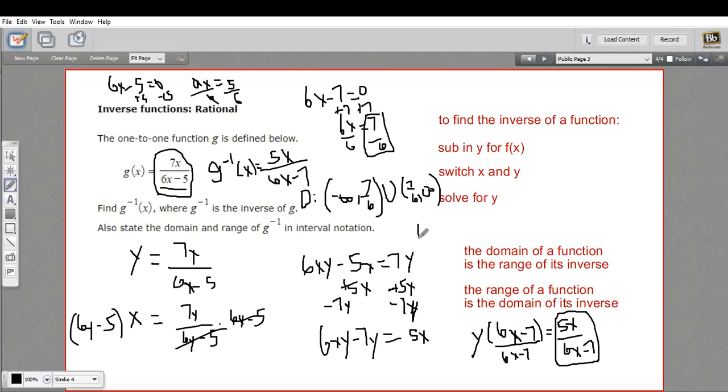So our range is going to be negative infinity up to, but not including 5 sixths, and 5 sixths up to infinity. So that is how to find the inverse of a rational function and figure out its domain and its range.